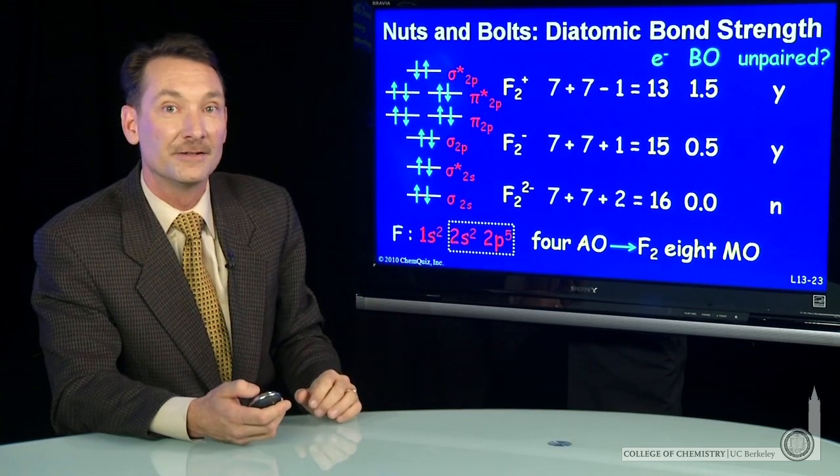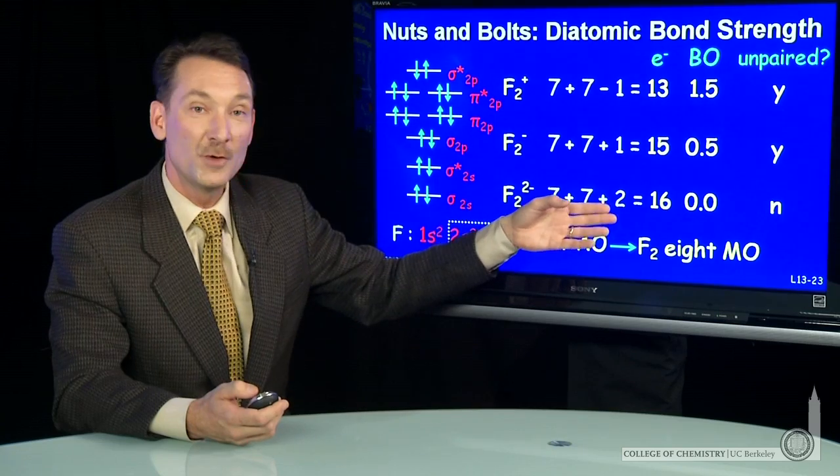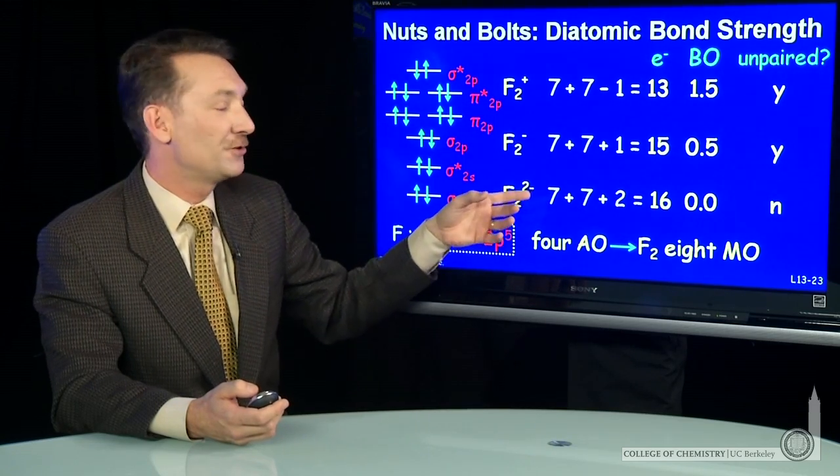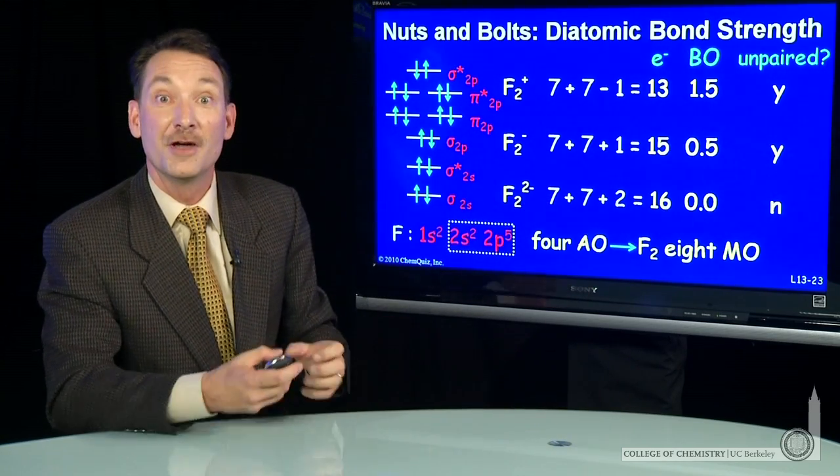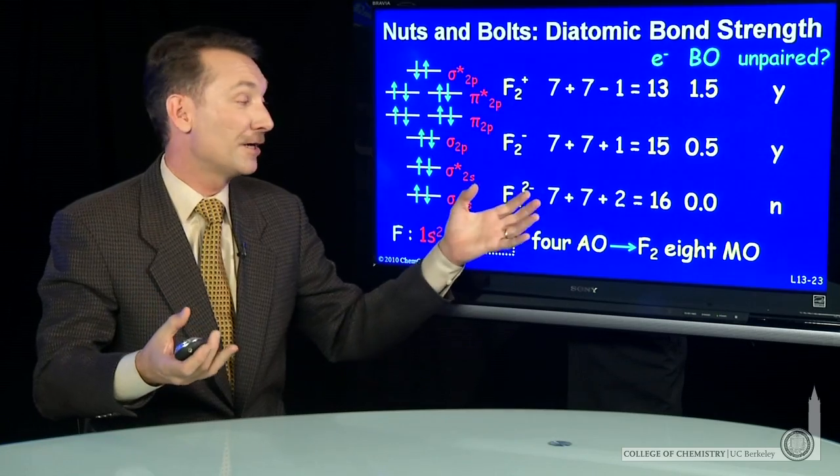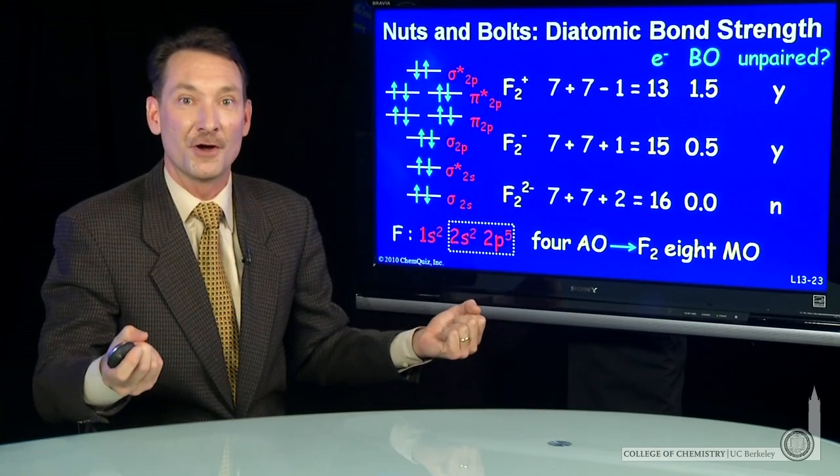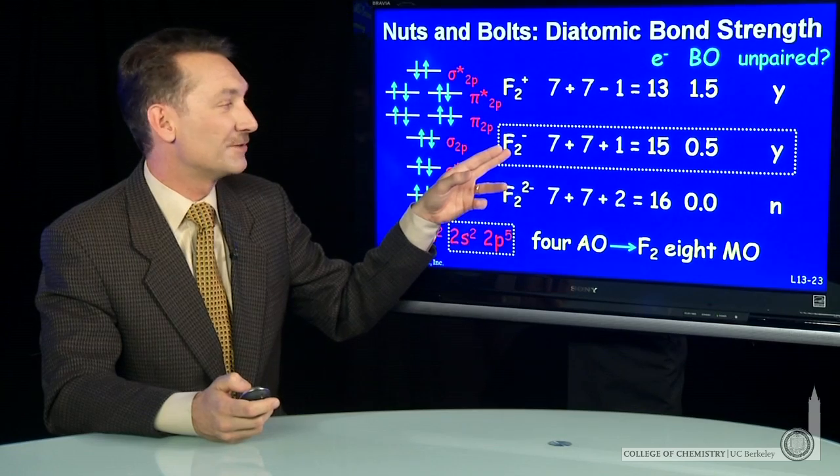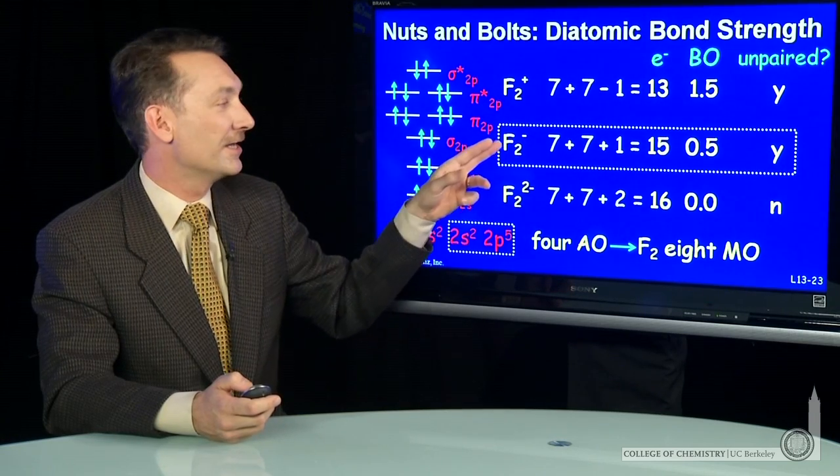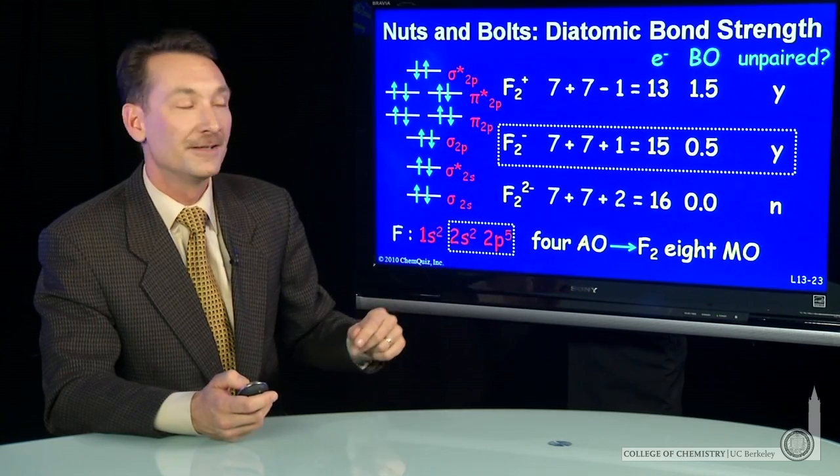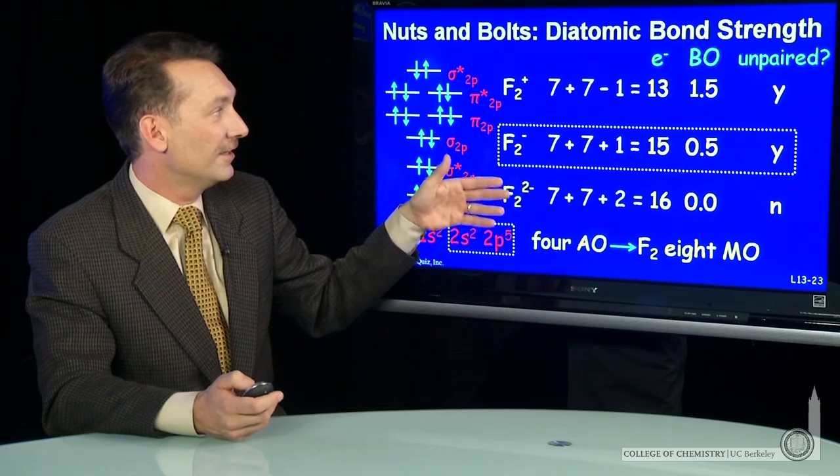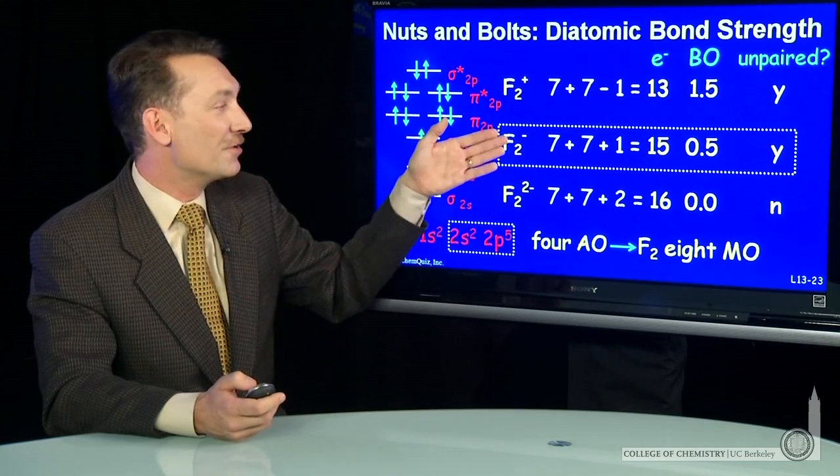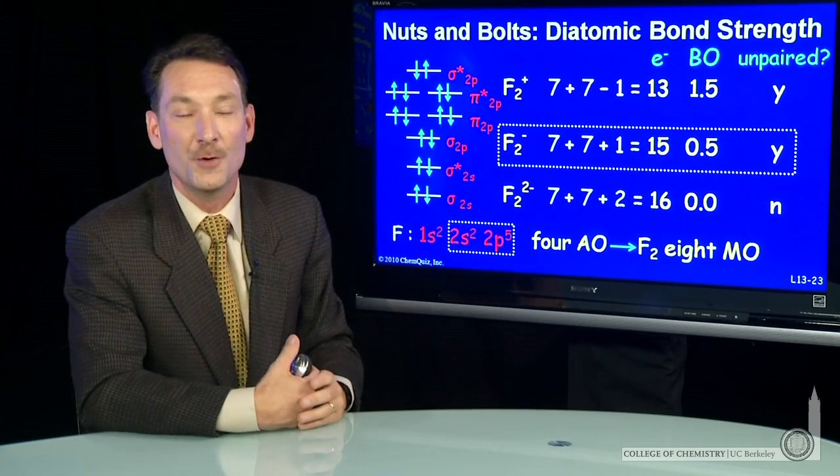So this has the weakest bond order. F2 minus 2 would fall apart as a molecule. Picking up two electrons goes to bond order 0, very unfavorable for F2. The paramagnetic species that has the weakest bond is F2 minus. So among these three, two paramagnetic species and the weaker bond, F2 minus.